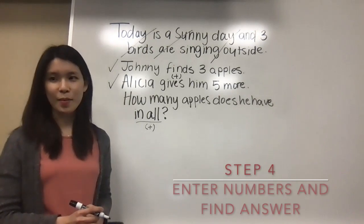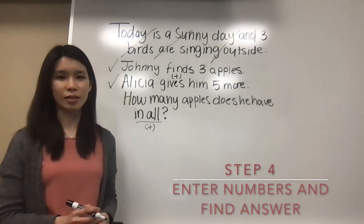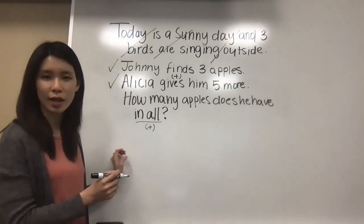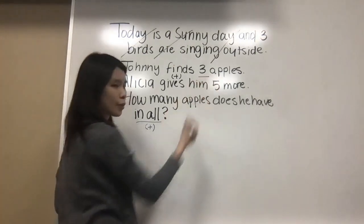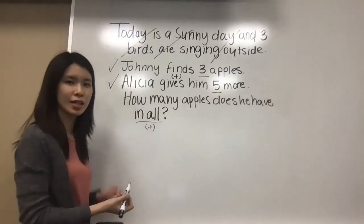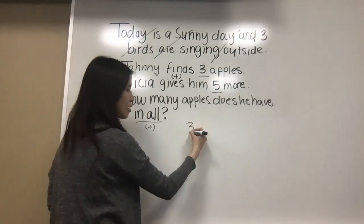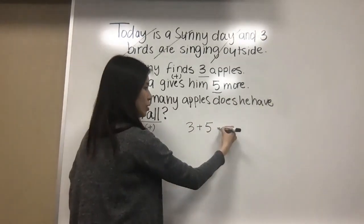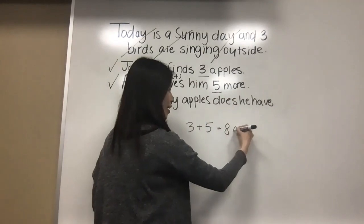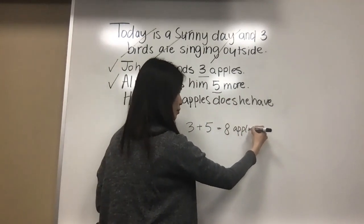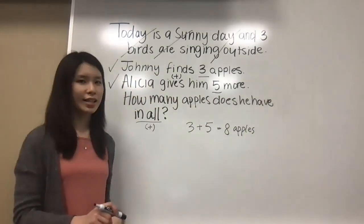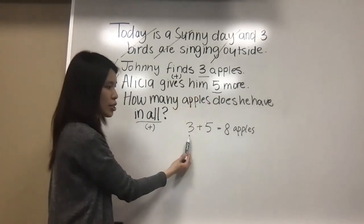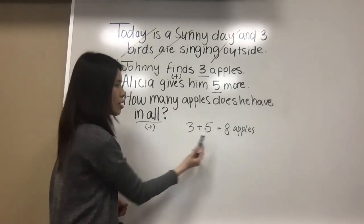For the last step, we need to enter the correct numbers and calculate, then check the answer. We can see there are two relevant numbers: three and five. Let's put them into an equation — three plus five equals eight apples. Now let's check the answer. We see two numbers in the question: three and five. In the equation, we do have both numbers. Check.